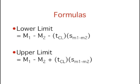A confidence interval on the difference between means is computed using the formulas shown here. M1 minus M2 is the difference between sample means, T sub CL is the T for the desired level of confidence, and S sub M1 minus M2 is the estimated standard error of the difference between means. The meanings of these terms will be made clearer as the calculations are demonstrated.